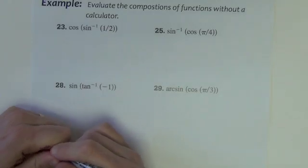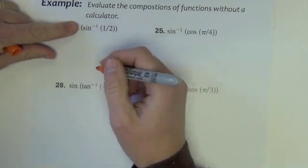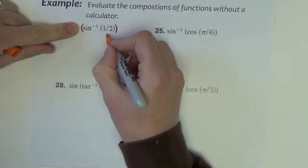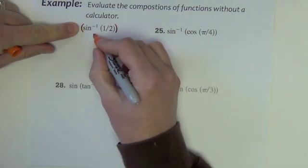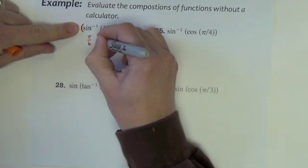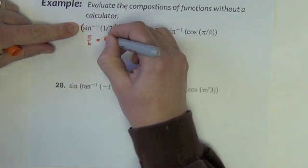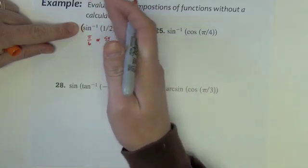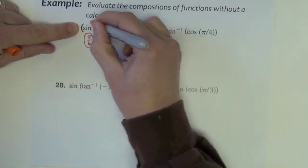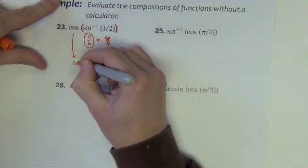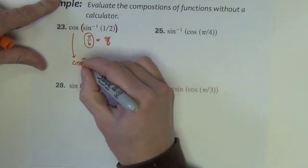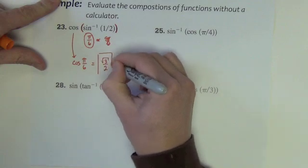Time for some composition of functions. Cosine of sine inverse of 1 half. With any composition, you always start on the inside, so I'm going to begin with sine inverse of 1 half. At what angles do we find a y value of 1 half? It happens at pi over 6 or 5 pi over 6. We want the one on the right side of the graph for sine inverse, so we throw out 5 pi over 6 and keep pi over 6. Now the cosine of all that inside stuff is cosine of pi over 6. What's the x value at pi over 6? It's square root of 3 over 2 — that's our answer.